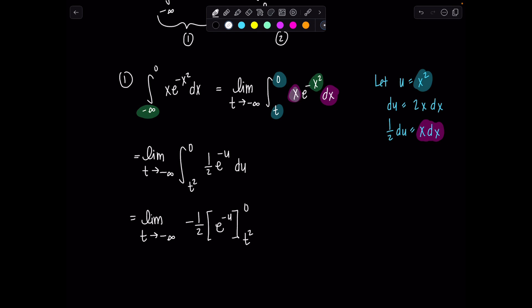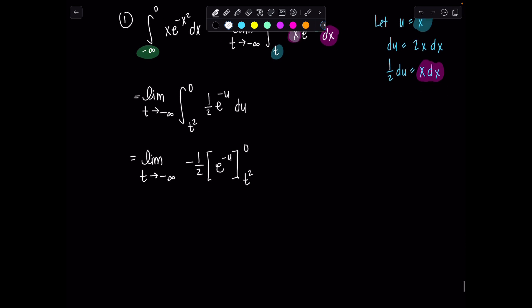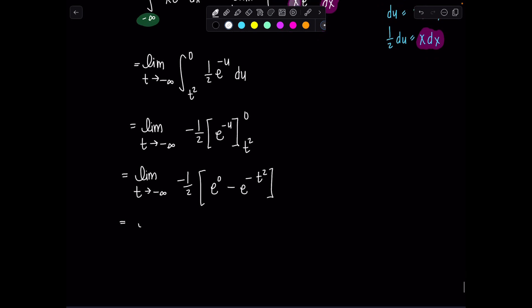Very nice. Let's see what's next. Limit t goes to negative infinity, negative one half, e to the negative zero, that's just e to the zero, minus e to the negative t squared. And this limit won't be too difficult. We can just evaluate it right here within this problem. So, e to the zero, that's just one, minus,